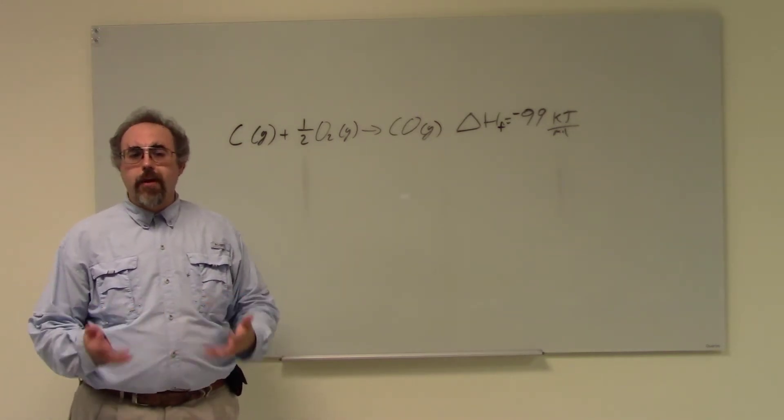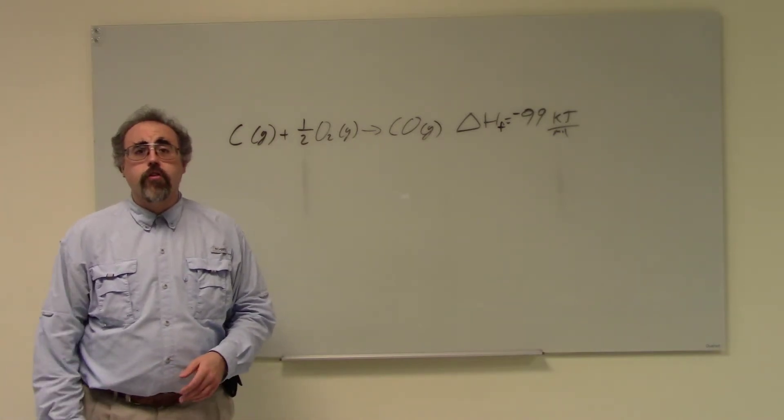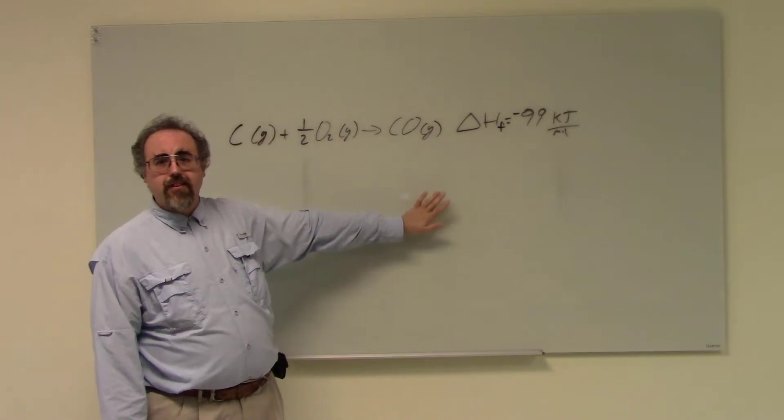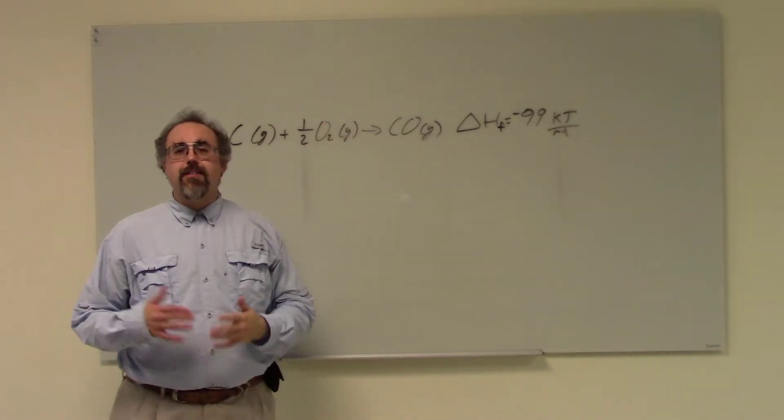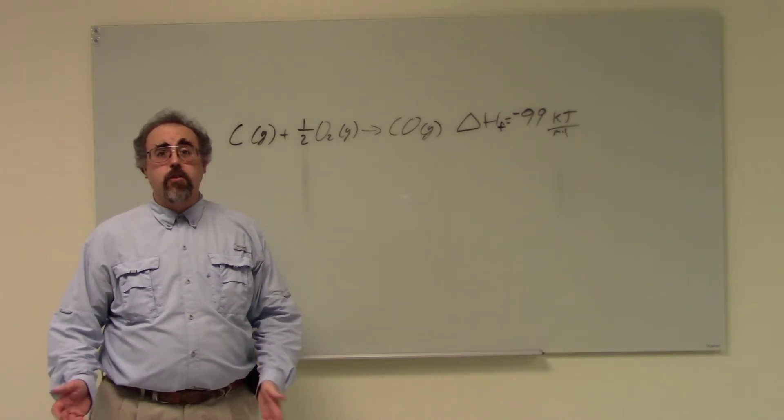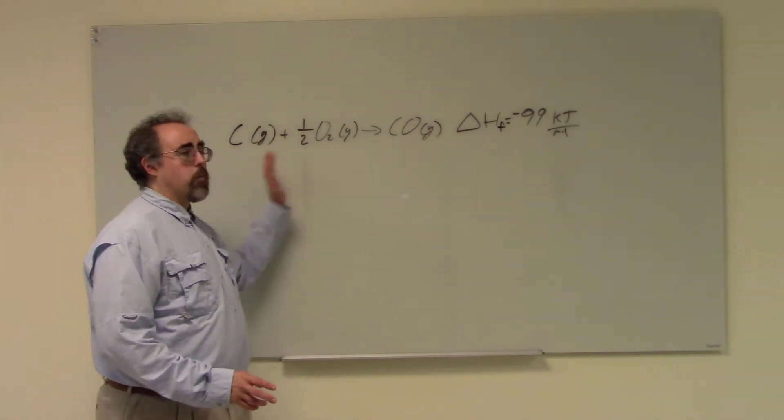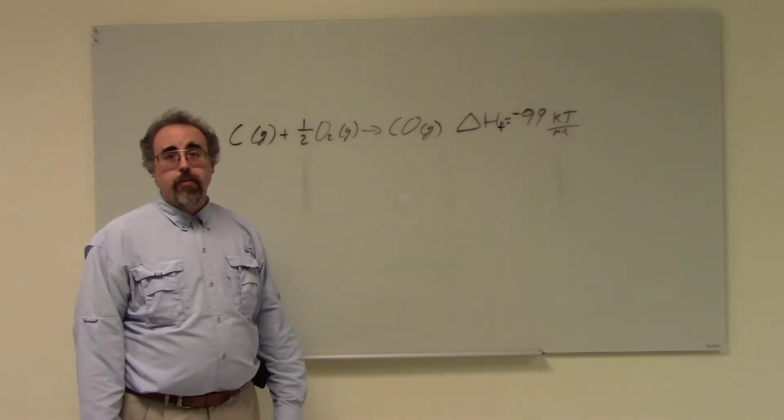But typically with enthalpies of formation in particular, but other enthalpies of various other reactions, these will be balanced so that the chemical of interest, in this case the CO, has a coefficient of one, and this makes life easier elsewhere. It allows you to do the whole shortcut on Hess's law, but just be forewarned. You do get fractional coefficients at times.